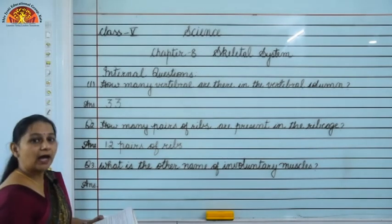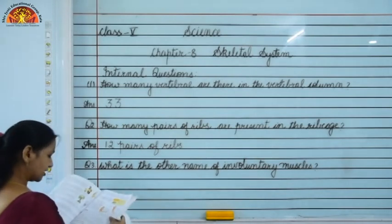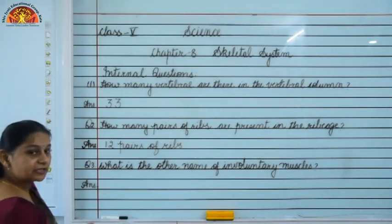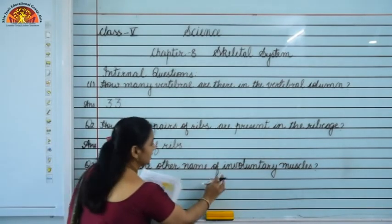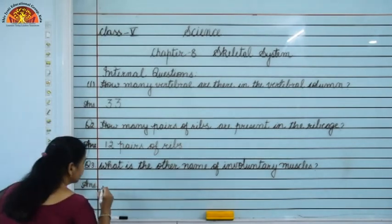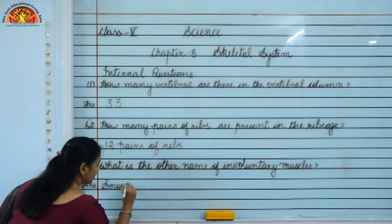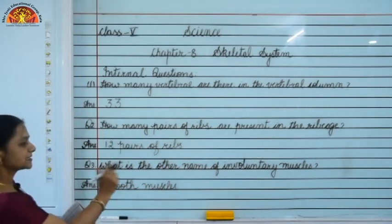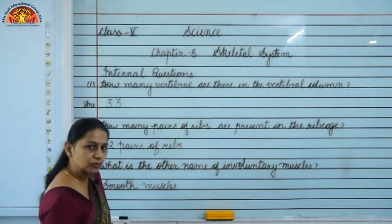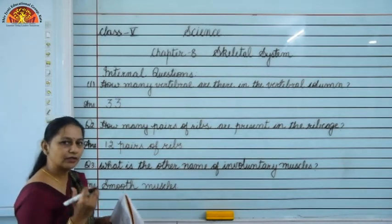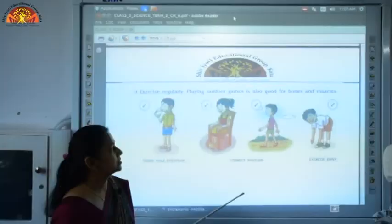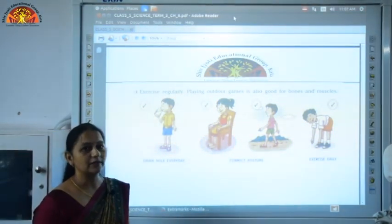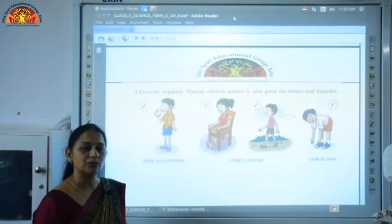The next internal question is on page number 73, just above the topic muscles and involuntary muscles: what is the other name of involuntary muscles? The answer is smooth muscles, because involuntary muscles are also called smooth muscles — they work on their own. So students, write the internal questions according to the page numbers mentioned. This was the chapter; I hope you have understood the video and written the internal questions. Thank you students.